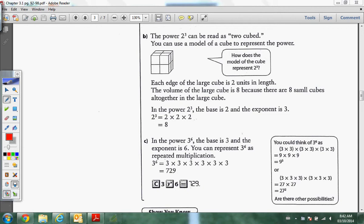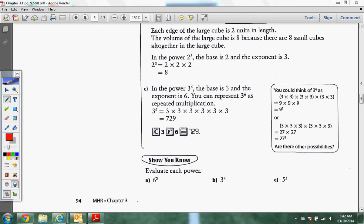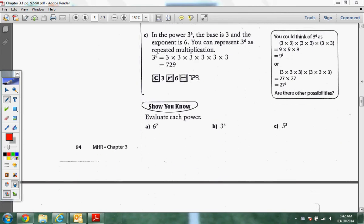Right here, this is exactly what we were just talking about. Power of 2 cubed. We read as 2 cubed. You can use the model of a cube represents the power. So, it's actually the same one I drew. 2, 2, and then 2 of height. So, 2 cubed. That would be 8. Now, if you think about that, if I took this apart, I'd have 4 cubes in the first row and 4 cubes in the second row, which would give me 8 cubes. That's how it all comes together. And the power of 3 to the 6, the base is 3. The exponent is 6.